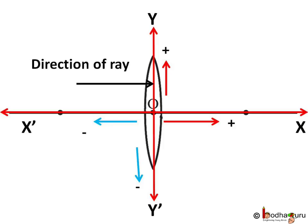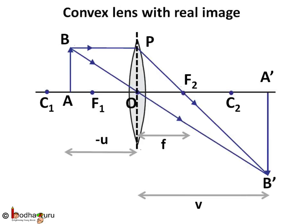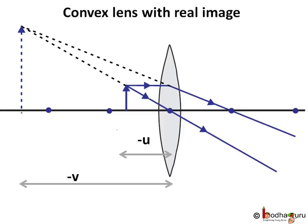Ensure you put the right sign in the formula. Like in most examples of convex lens where a real inverted image is formed on the other side, U will be represented with negative sign as it is left of O, whereas F and V will be in positive sign.